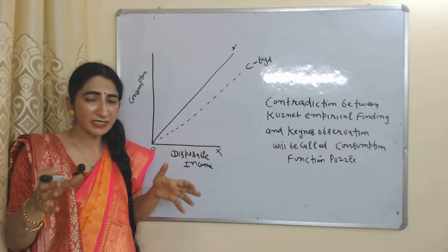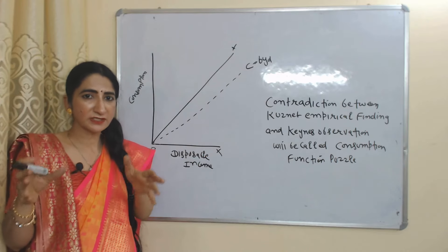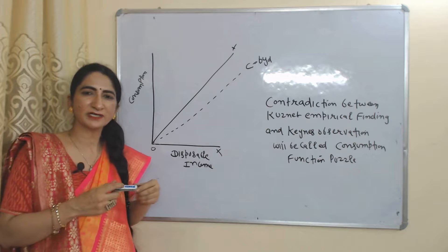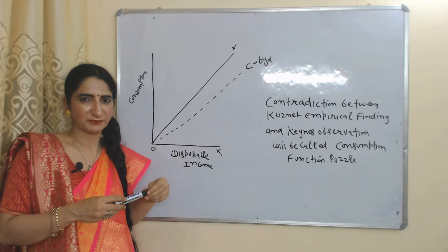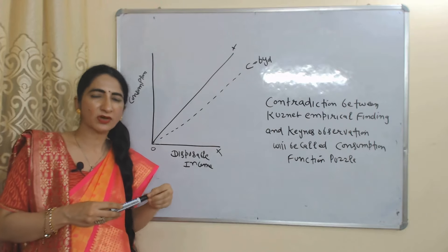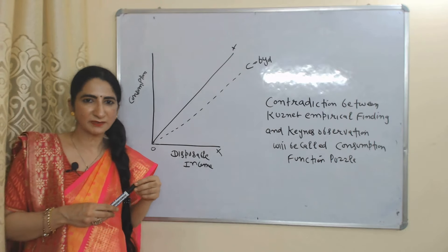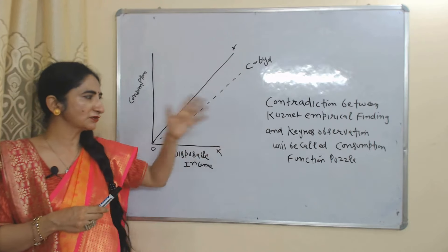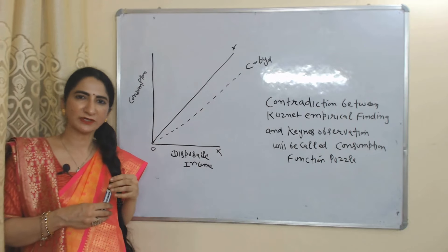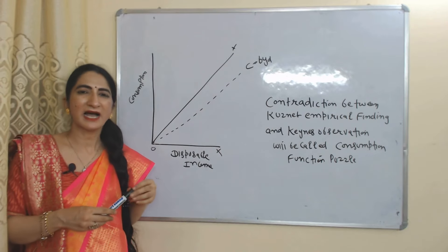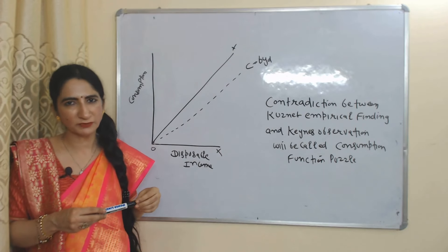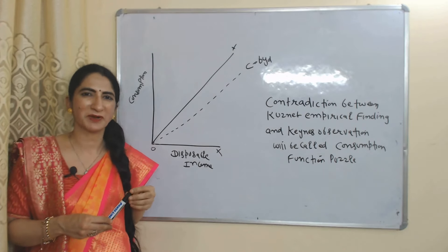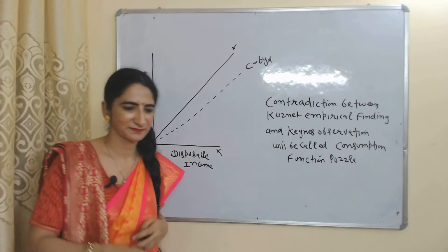This conflict is resolved by many economists by saying Keynes' consumption function is a short-run consumption function and Kuznets' consumption function is a long-run consumption function. So this is all about Keynes' consumption function and Kuznets' consumption puzzle. Thank you so much for watching this video. Bye, take care.